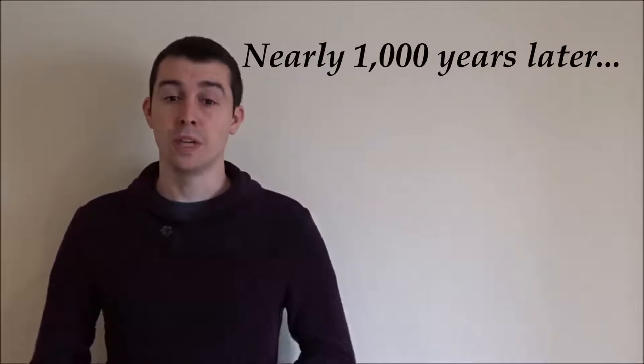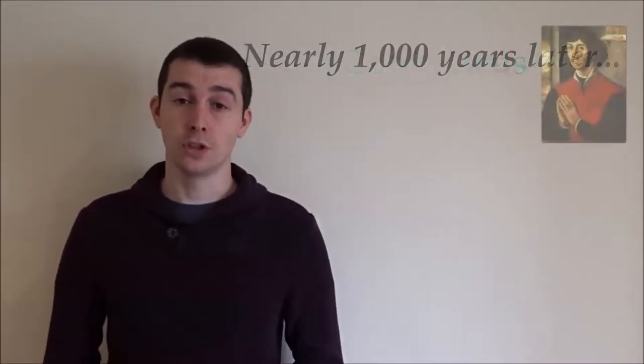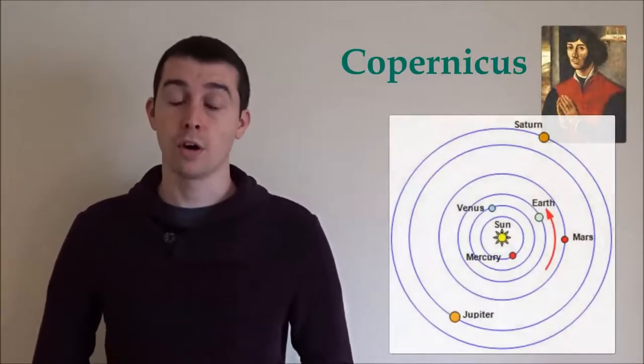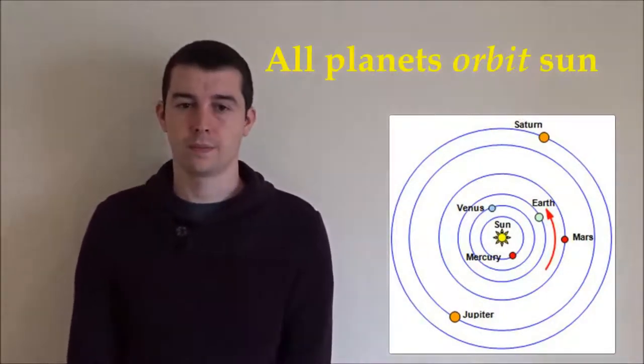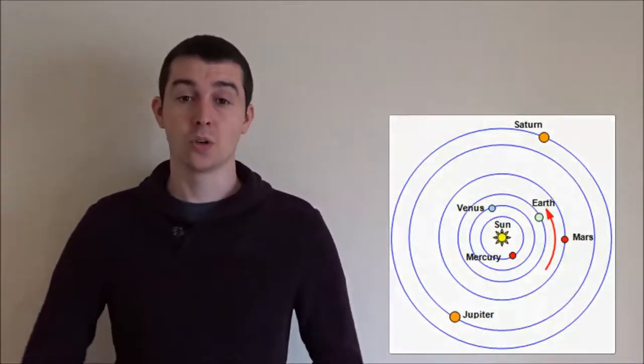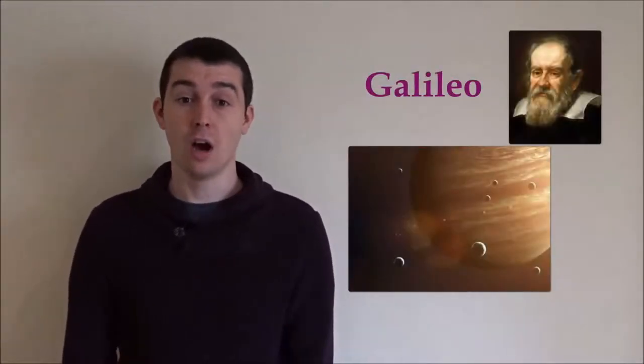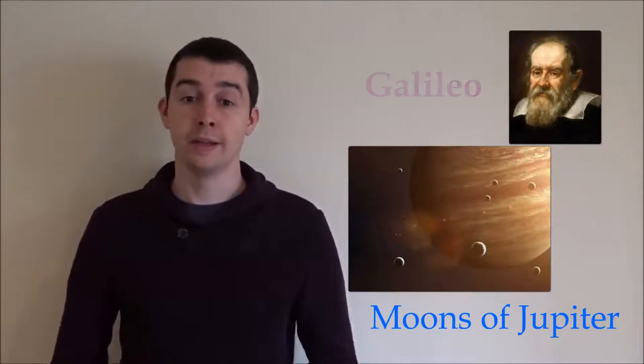This idea was believed for nearly 1,000 years until Copernicus proposed that the earth was a planet just like Venus and that all planets orbited the sun. His ideas were supported by Galileo's discovery of moons orbiting Jupiter. This meant that they were orbiting Jupiter and not earth.